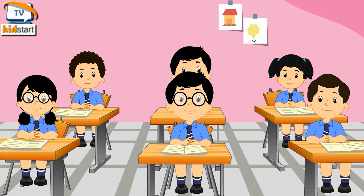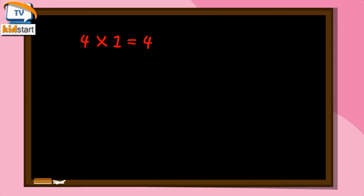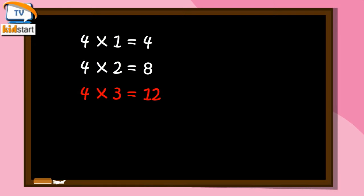Four Ones Are Four. Four Two's Are Eight. Four Three's Are Twelve. Four Four's Are Sixteen.